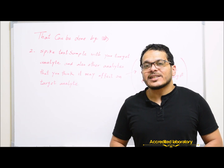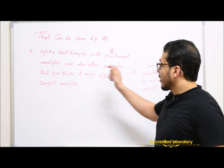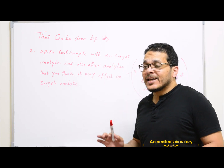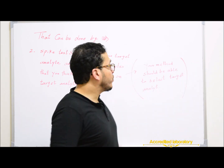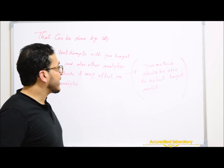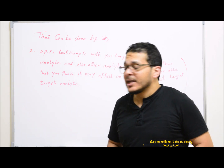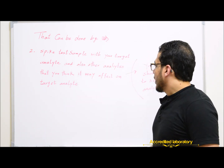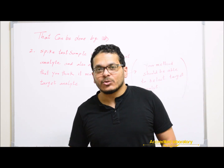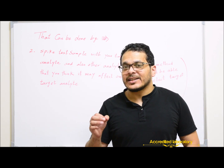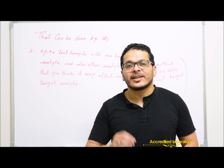Another way to ensure selectivity is to spike your test sample with your target analytes and also with other analytes that you think may affect the target analytes. Your method should be able to select the target analytes even in the presence of these interfering elements already spiked in the test sample. This should also be replicate analysis. And if you are working with HPLC or LC-MS, you have to select the retention time for your compound using a reference standard of your target analytes.